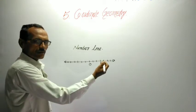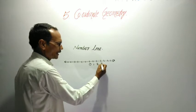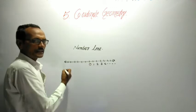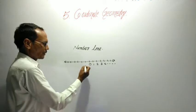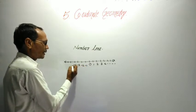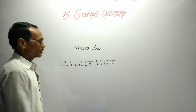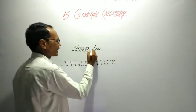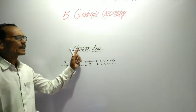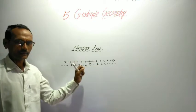In the RHS of 0, we can take all positive real numbers, and in the left side of 0, we can take all negative real numbers. So, the line is known as number line.